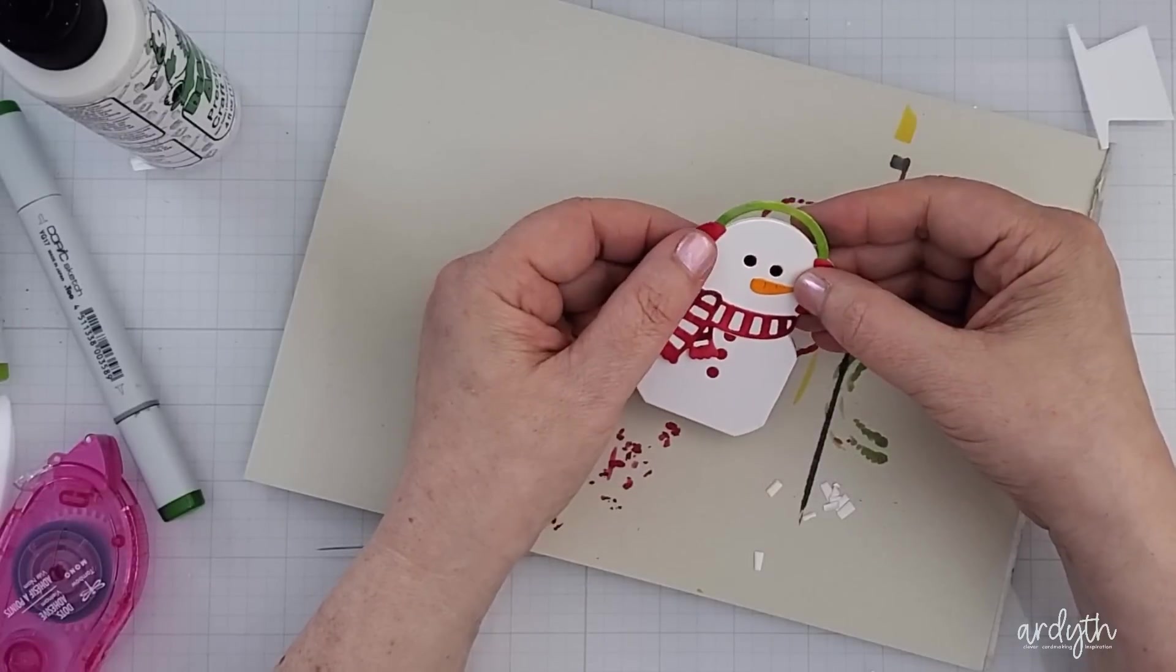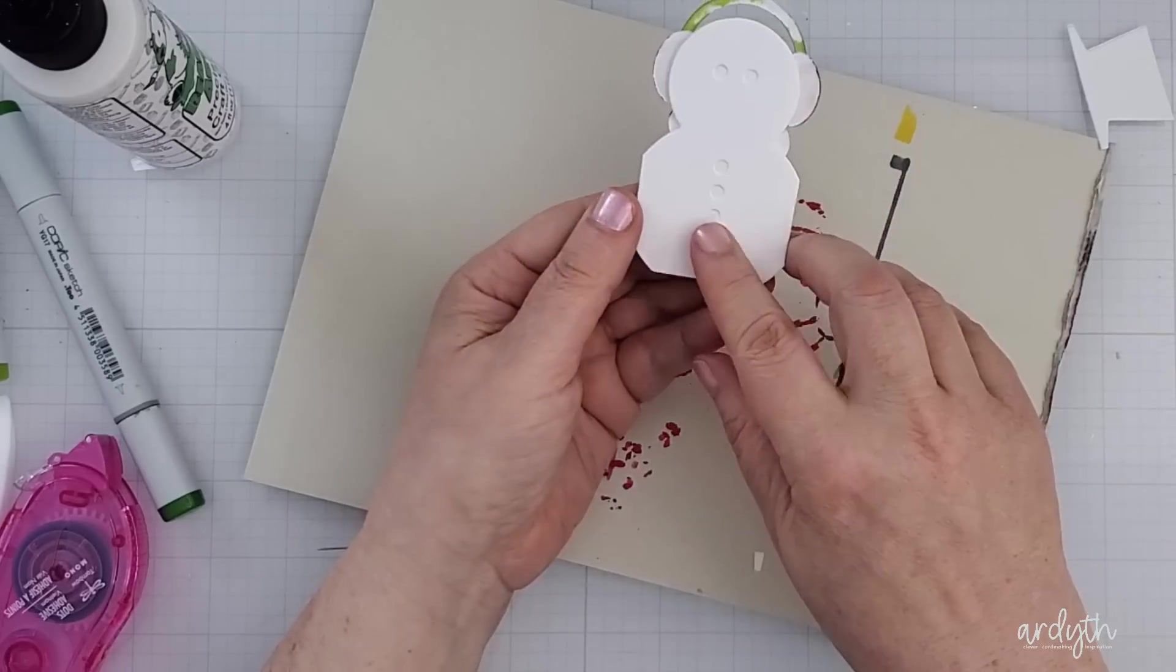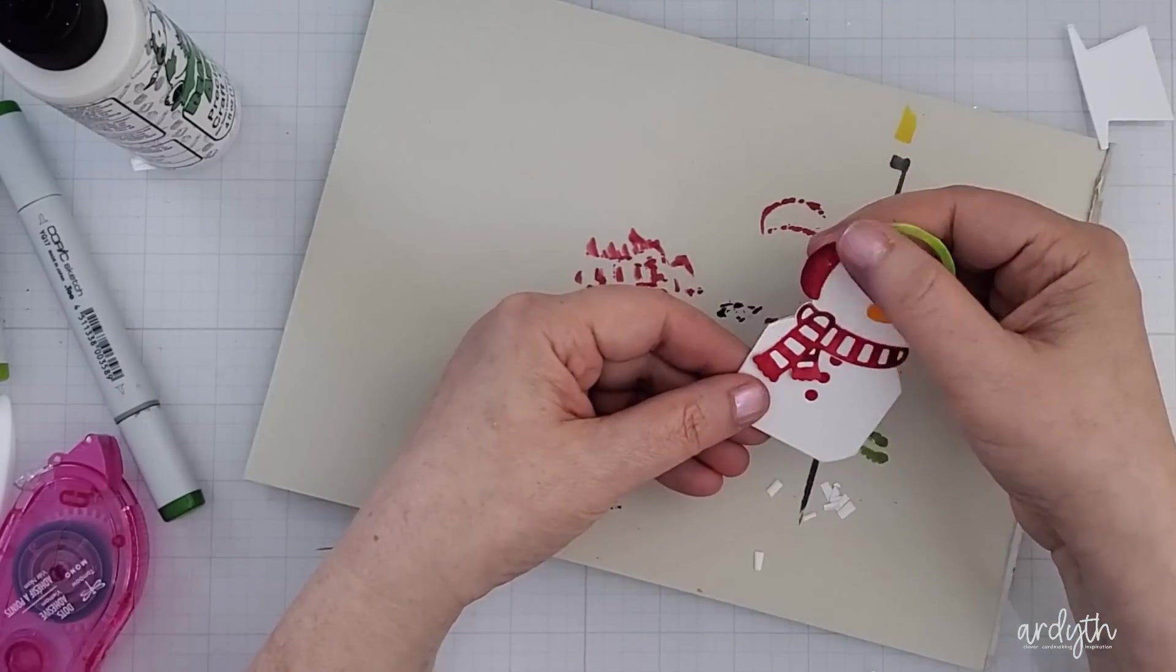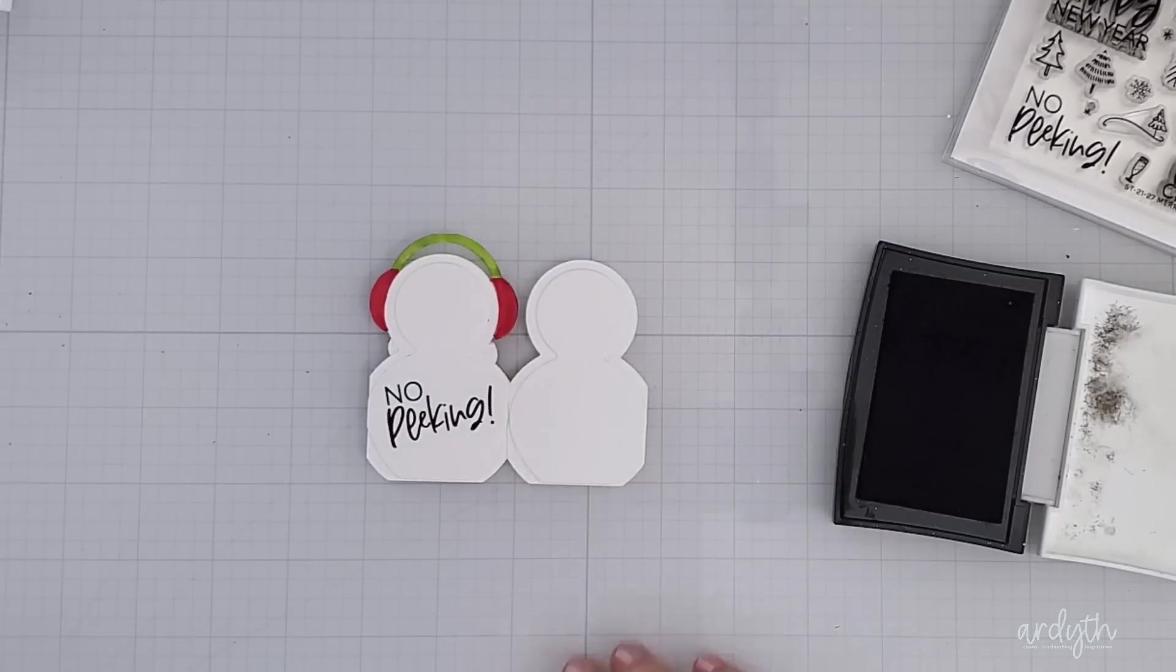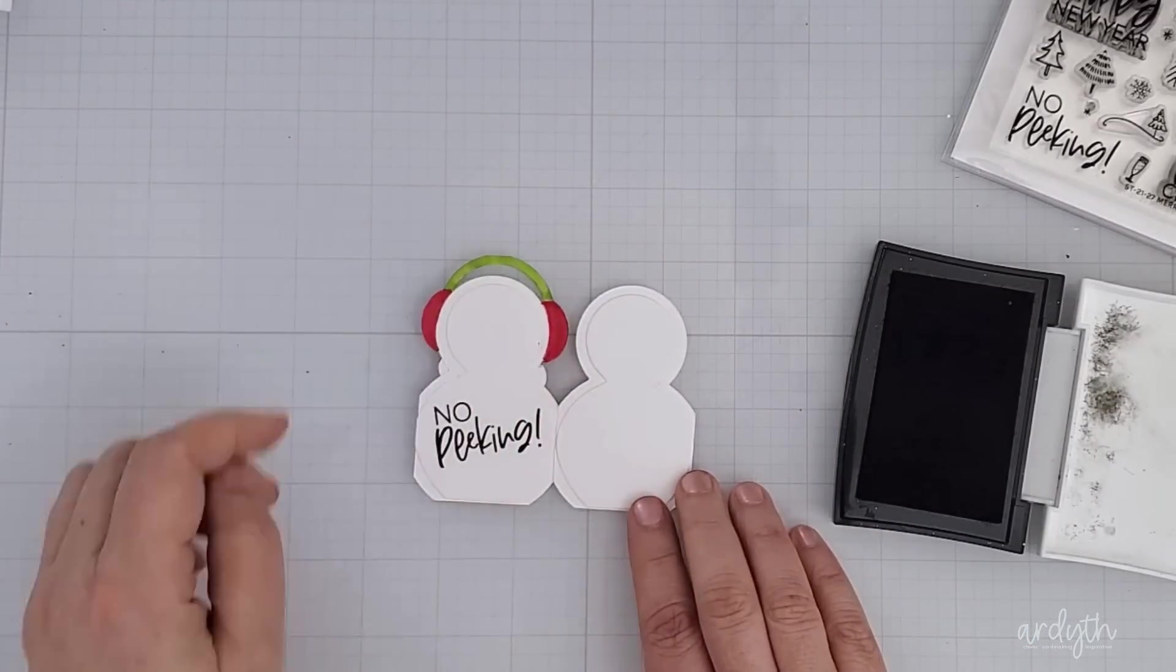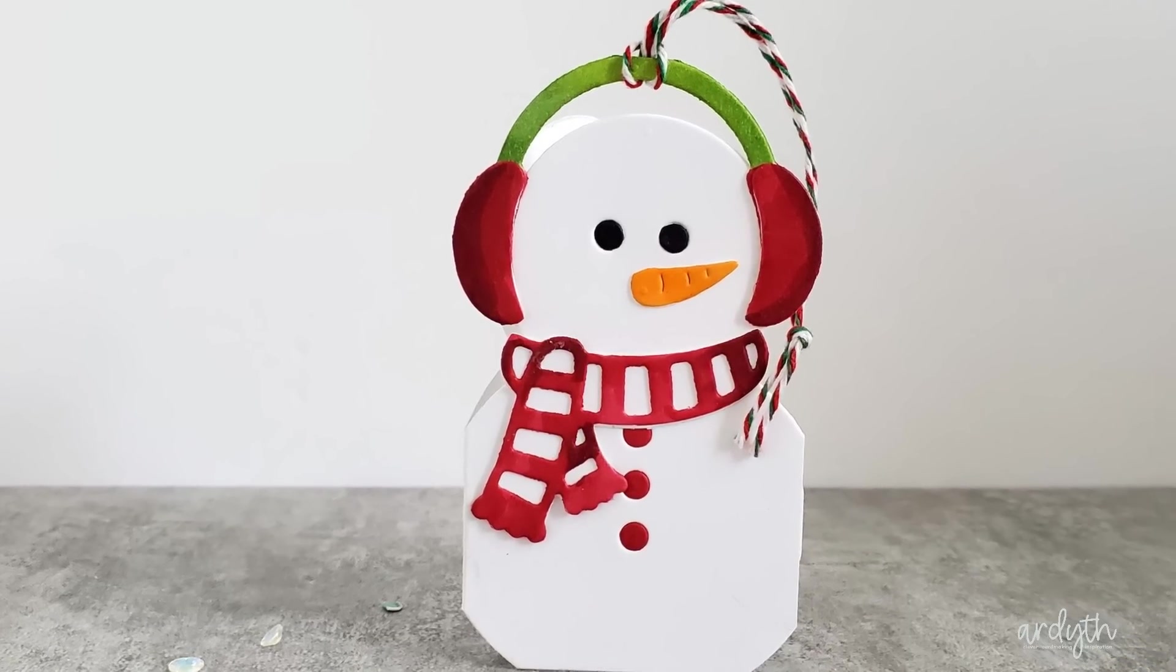I glued all the accessories to the snowman using liquid glue and when I turned it over that's when I realized I needed to color the back of the earmuffs as well. I stamped a no peeking sentiment on the inside of the tag and there's still plenty of room for you to write a message. You can glue this to a package or you could string some twine or ribbon through the earmuffs if you wanted to attach it to the gift that way.